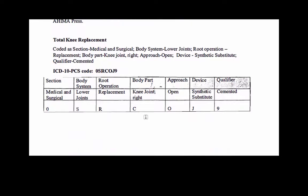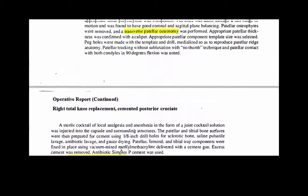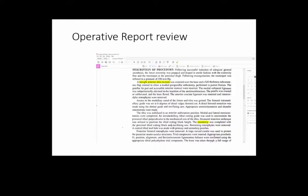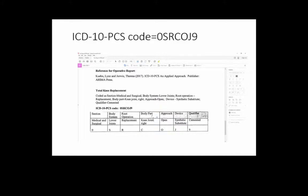The root operation is a replacement because you physically cut out the joint and replace it with a synthetic substitute — that's what a joint replacement is. For the seven-character PCS code: the first character zero is medical surgical section; S is the body system, lower joints; R is the root operation, replacement; C is the body part, right knee joint; the approach is open (O); J is synthetic substitute; and the cemented qualifier. I just want you to see what an operative report looks like and how you look for various elements to assign those seven characters.